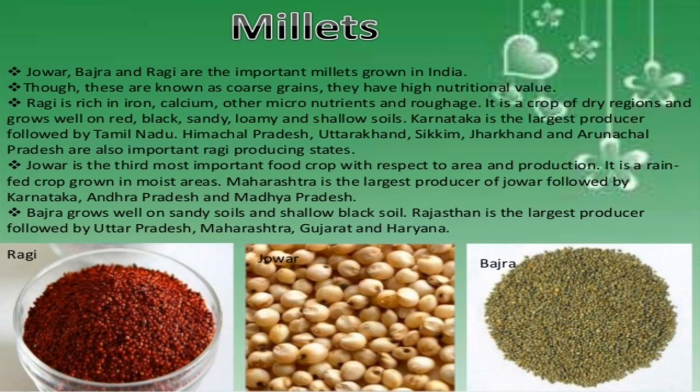Jowar is the third most important food crop with respect to area and production. It is a rain-fed crop growing in moist areas. Maharashtra is the largest producer of Jowar, followed by Karnataka, Andhra Pradesh and Madhya Pradesh. Bajra grows well on sandy soil and shallow black soil. Rajasthan is the largest producer, followed by Uttar Pradesh, Maharashtra, Gujarat and Haryana.